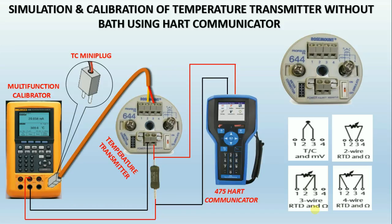After completing connections, simulate the zero temperature value according to the lower range value in HART and check the corresponding 4 milliamps in the process calibrator. If it is not showing the corresponding milliamps, then by using HART, do the lower sensor trim. After this, simulate the full range of the transmitter in the process calibrator and check the corresponding 20 milliamps. If it is not showing the corresponding milliamps, then adjust 20 milliamps by doing upper sensor trim using HART.